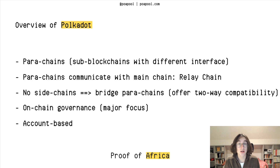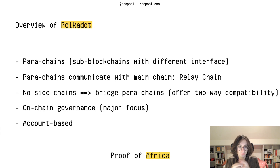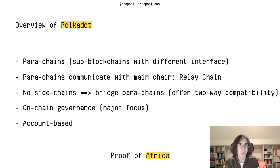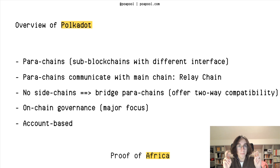There is a lot of on-chain governance in Polkadot — it's one of the major focuses. They have a system with a council, voting, and announcing proposals. It's also account-based, so like Ethereum, they use this bank account system essentially.